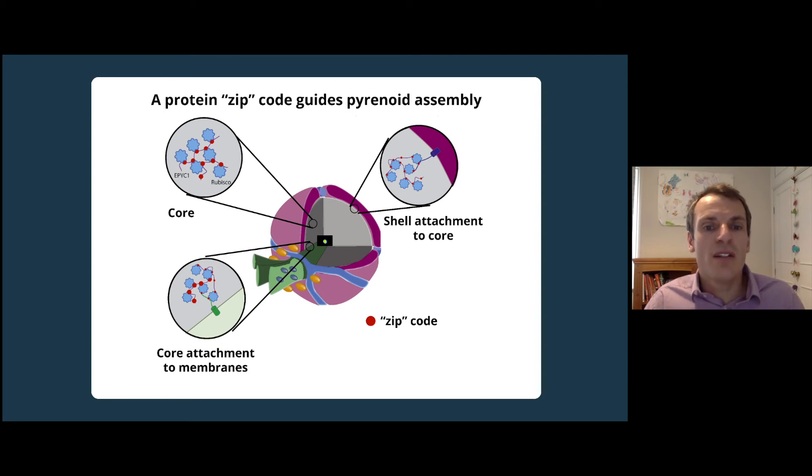This zip code sequence binds rubisco and appears to determine the composition and organization of the pyrenoid. For example, a protein that links rubisco together to form the core of the pyrenoid has multiple copies of this zip code.